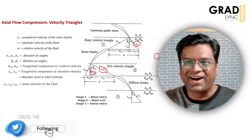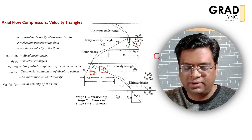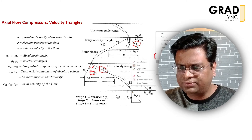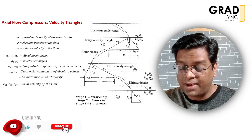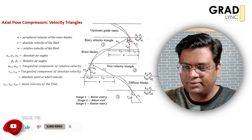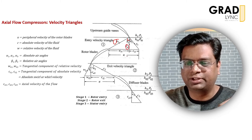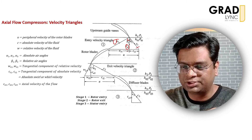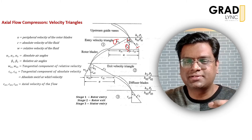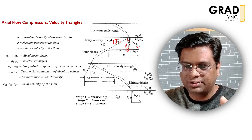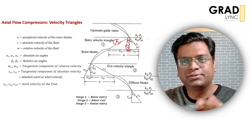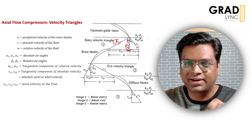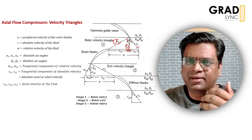We also have beta angles, sometimes called blade angles or relative air angles. Alpha represents the angle between the absolute velocity and the axial velocity, whereas beta represents the angle between the relative velocity w and the axial velocity. Alpha is therefore called the absolute air angle and beta is called the relative air angle — or blade angle. So beta 1, beta 2, beta 3 are blade angles, whereas alpha 1, alpha 2, alpha 3 are air angles.